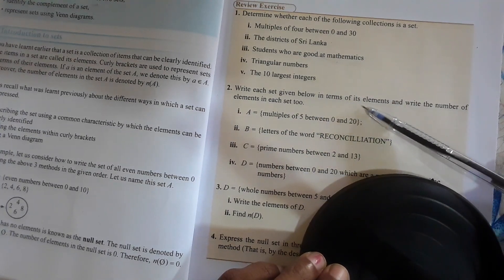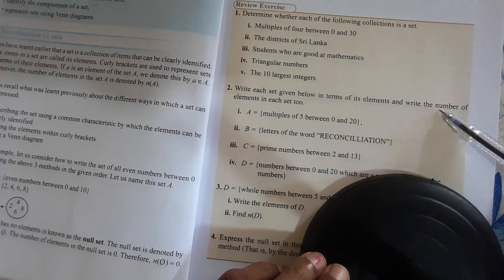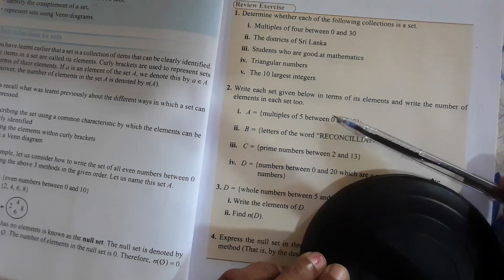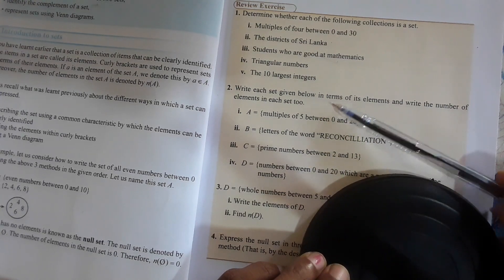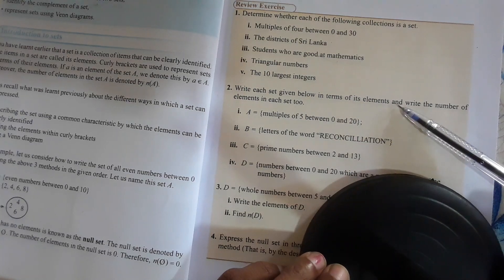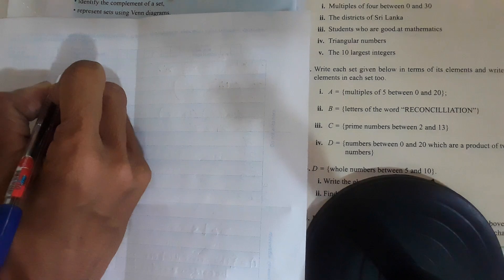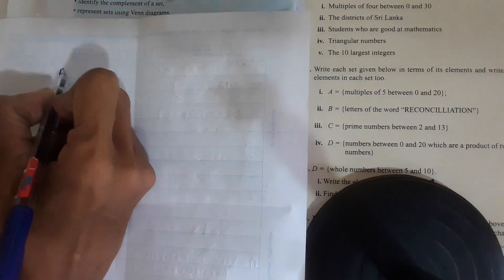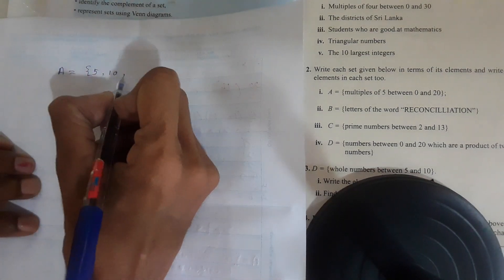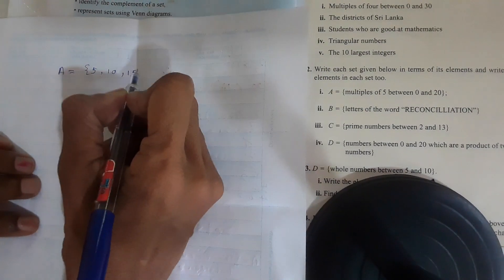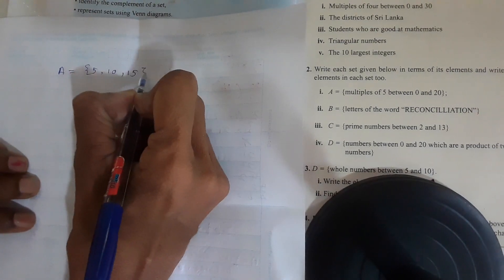The second one: Write each set given below in terms of its elements, and write the number of elements in each set too. Multiples of 5 between 0 and 20: 5, 10, 15. Between 0 and 20, we can't write 20.